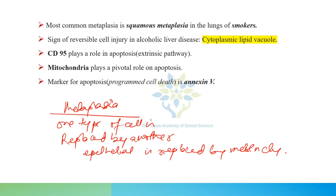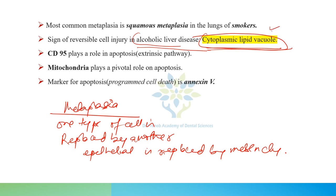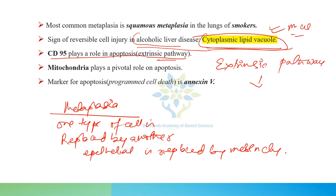The sign of reversible cell injury in alcoholic liver disease is cytoplasmic lipid vacuoles — an important MCQ point. CD95 plays a role in the extrinsic pathway of apoptosis. Apoptosis has two pathways: extrinsic and intrinsic. Mitochondria plays a pivotal role in apoptosis.